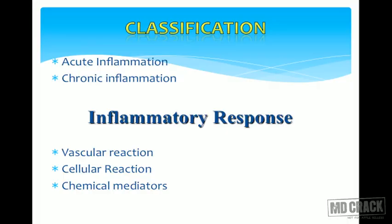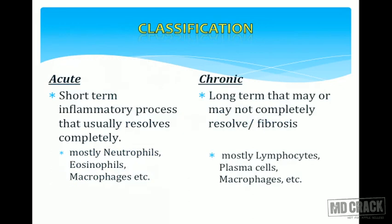Inflammation most of the time will resolve, or it resolves by fibrosis — that is, healing by fibrosis. Pathologists classify inflammation mainly as acute inflammation and chronic inflammation. Acute inflammation is of short duration, and the cells mainly involved are neutrophils. Chronic inflammation is of long duration and most of the time heals with fibrosis, whereas acute inflammation usually resolves completely without many complications.